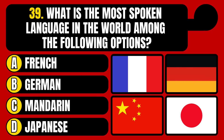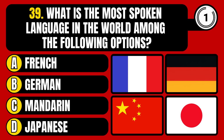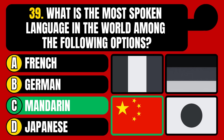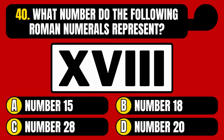What is the most spoken language in the world among the following options? French, German, Mandarin, or Japanese? The correct answer is option C, Mandarin.